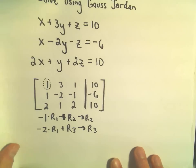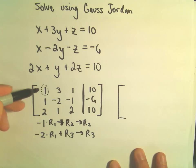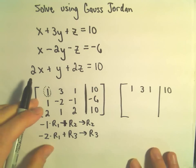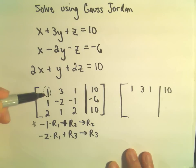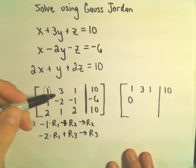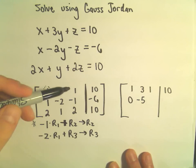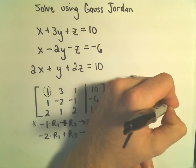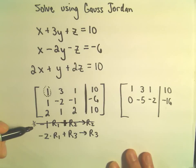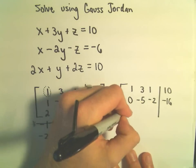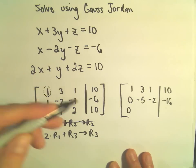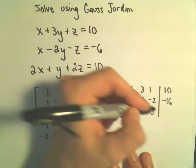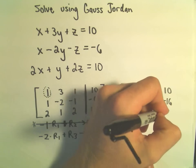I'm not going to do anything to the first row, so we have 1, 3, 1, and 10. For the new row 2: negative 1 times 1 plus 1 gives 0; negative 3 plus negative 2 gives negative 5; negative 1 plus negative 1 gives negative 2; negative 10 plus negative 6 gives negative 16. For the new row 3: negative 2 plus 2 gives 0; negative 6 plus 1 gives negative 5; negative 2 plus 2 gives 0; negative 20 plus 10 gives negative 10.